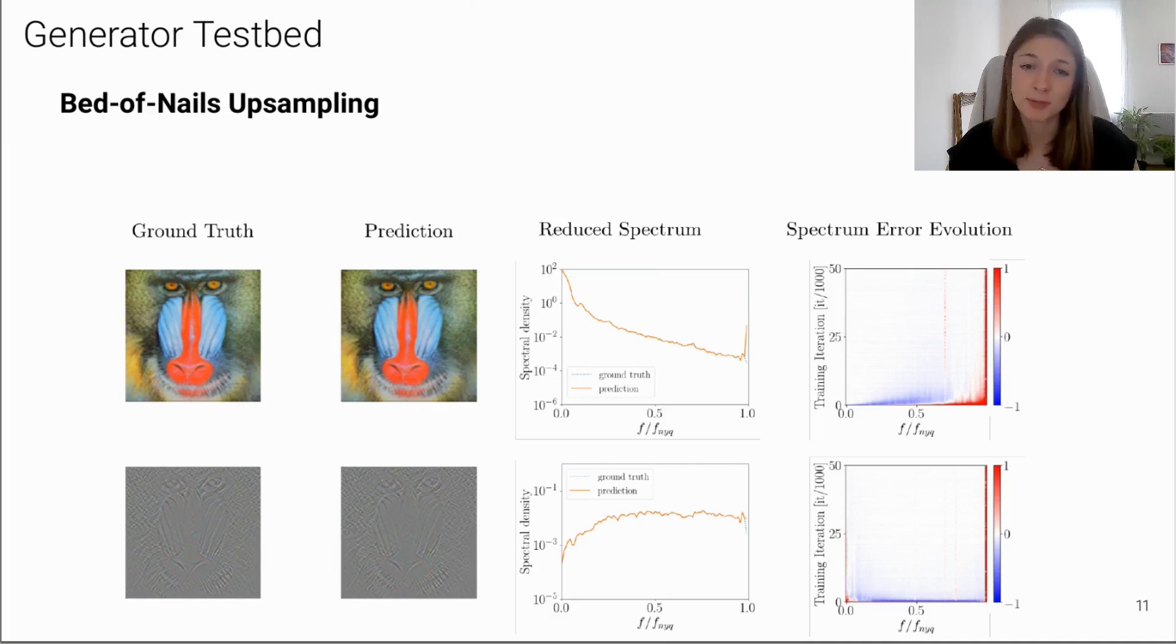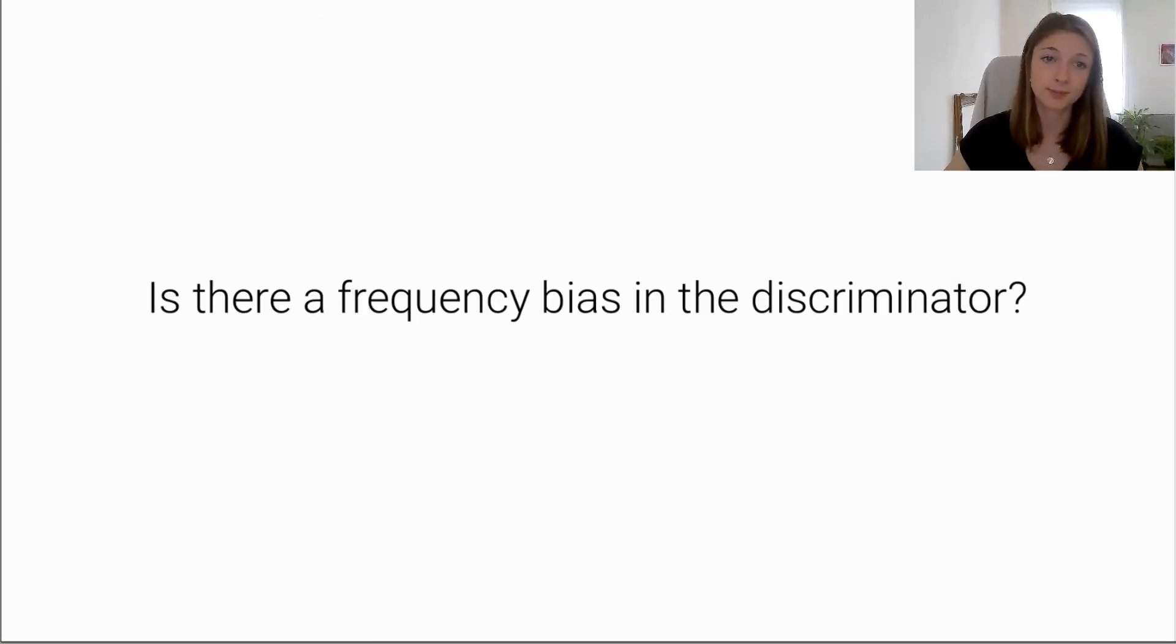However, further experiments in our paper indicate that we can indeed get rid of this peak by adding a loss on the spectrum. Therefore, given a suitable training signal, the generator can learn to compensate for these artifacts. This leads us to question the quality of the training signal. Can the discriminator even detect high frequencies and provide the necessary supervision?